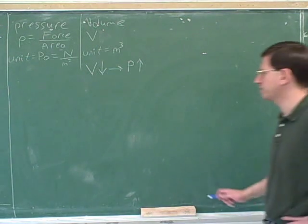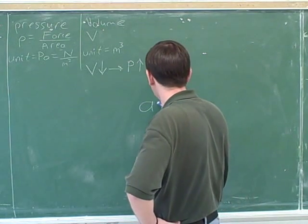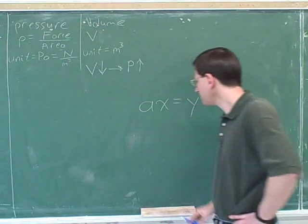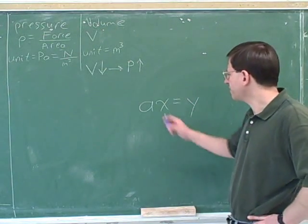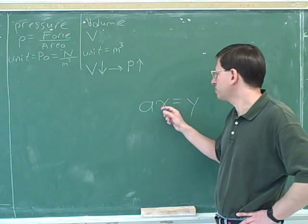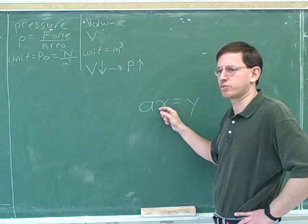All right, and now we have to do a little mathematical work. If we have an equation like this, does this equation mean that there's a direct relationship between A and X or an inverse? Let's kind of work that through.